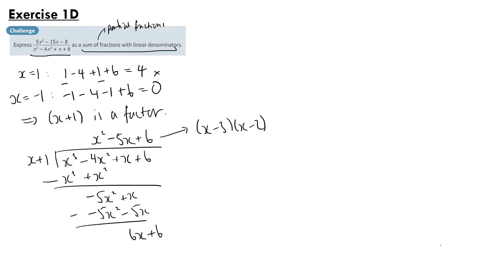So we have that our fraction is equal to 5x squared minus 15x minus 8 over x plus 1, x minus 2, and x minus 3. And if we set that equal to a over x plus 1 plus b over x minus 2 plus c over x minus 3.